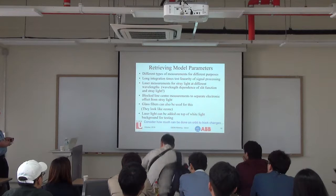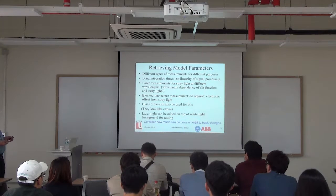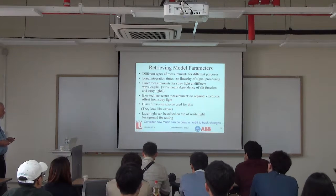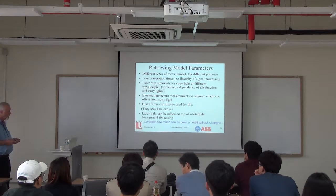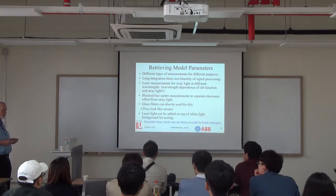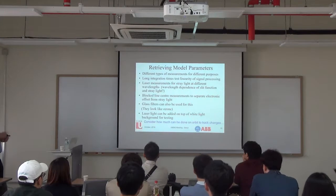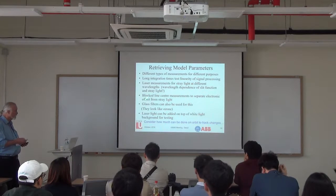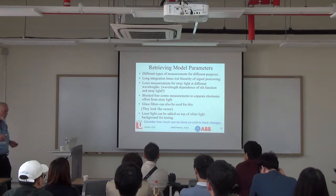One example of calibration strategies in spectral processing: laser measurements allow you to look for stray light as a function of wavelength. The blocked center measurement is useful to separate electronic offsets from stray light. Glass filters are interesting because they mimic ozone by cutting off at short wavelengths—different glass types fall off fairly rapidly at the short-wavelength end. This helps quantify the stray light problem even if it doesn't fix it.